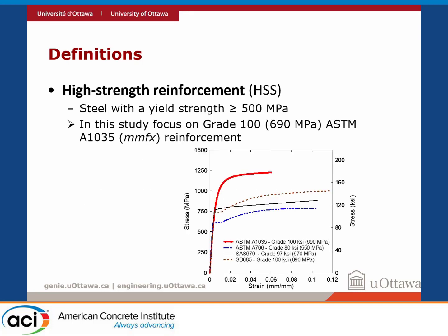High-strength reinforcement — I'm going to call it HSS — is steel with a yield strength greater than or equal to 500 MPa. There are actually many different types of high-strength steel available in North America. What we're focusing on is Grade 100, which is a 690 MPa steel standardized in ASTM A1035, also known as MMFX reinforcement. You can see their behaviors are quite different across the various types.